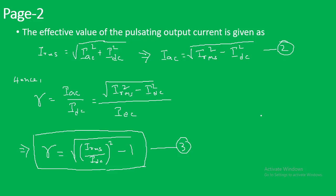For the pulsating DC, the effective value — that is, the RMS value — is given as: I_RMS = √(I²_AC + I²_DC), meaning the magnitudes of both the AC component and the DC component are considered when finding the root mean square. From this equation we can find that I_AC = √(I²_RMS − I²_DC). Let us call this equation number 2.